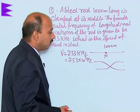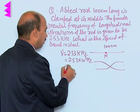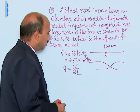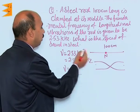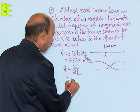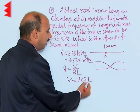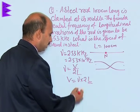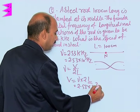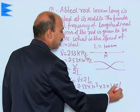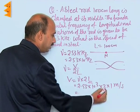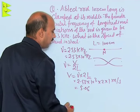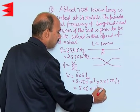The formula for frequency in this case is nu equals V upon 2L. We need to calculate V, the speed of sound in the rod. So V equals nu into 2L. L is given as 100 centimeters, that is 1 meter. Therefore V equals 2.53 into 10 to the power 3, multiplied by 2 into 1, giving 5.06 into 10 to the power 3 meters per second.